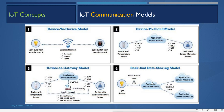In the back-end data sharing model, a light sensor sends information via CoAP or HTTP to a cloud service provider. From there, the data is shared with multiple application service providers — provider two and provider three — enabling data sharing across different service providers.